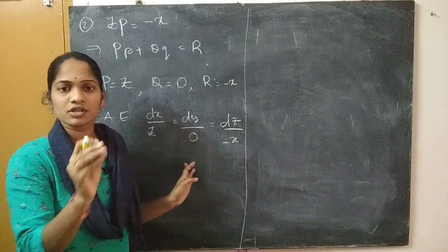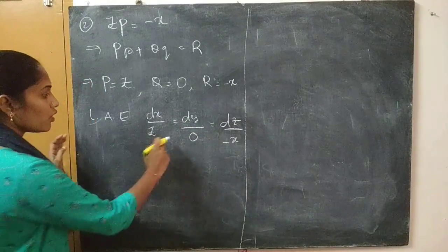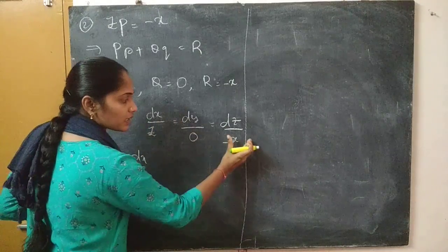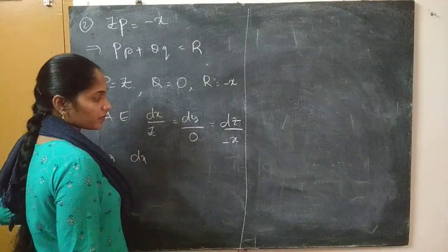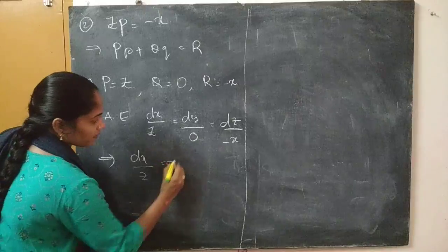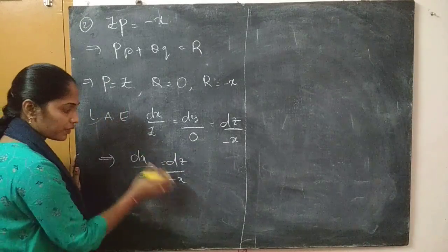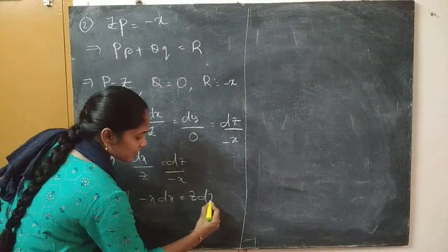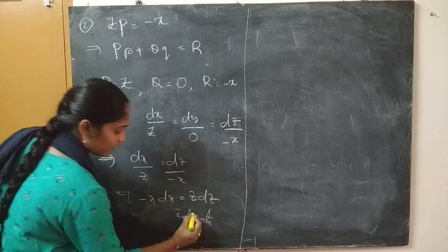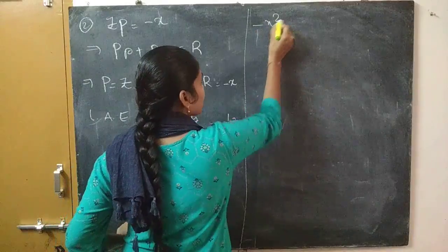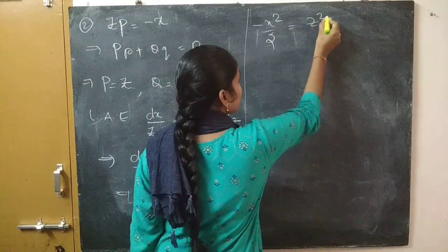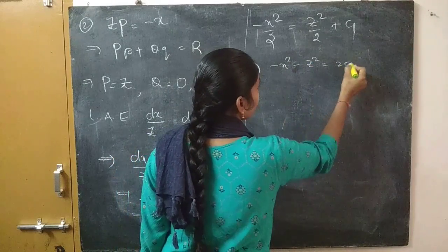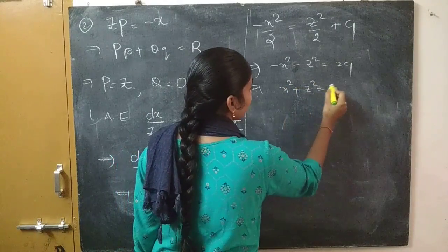Now take the first and third fractions: dx by z equals dz by (minus x). Using variable separable, cross multiply to get minus x dx equals z dz. Integrate both sides: minus x squared by 2 equals z squared by 2 plus c1. Rearranging: minus x squared minus z squared equals 2c1, so x squared plus z squared equals c1 (absorbing the constant).